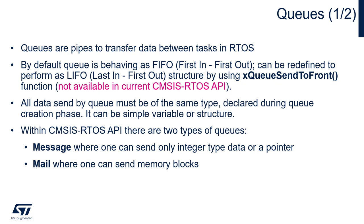By default, a queue behaves as a FIFO — first in, first out — and can be redefined to perform as a last in, first out structure by using the xQueueSendToFront function. However, this functionality is not available within CMSIS RTOS API, so if you need it, please use the FreeRTOS API instead, which is much more flexible. All data sent via the queue must be the same type declared during the queue creation phase.